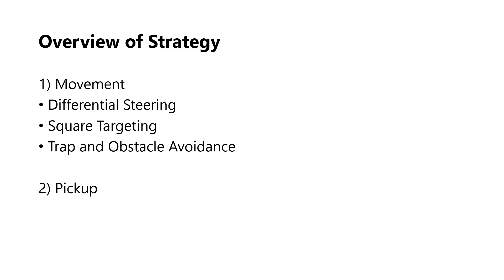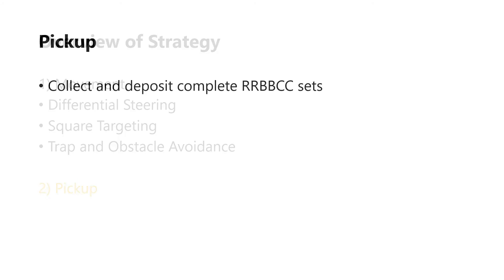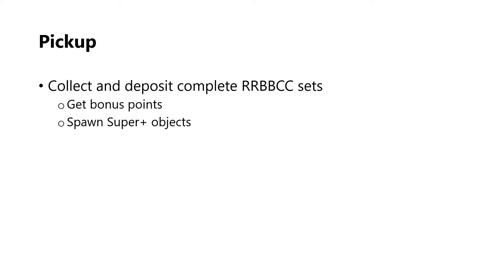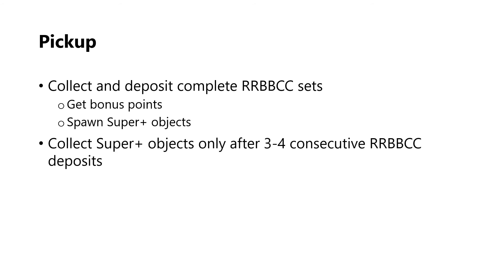Next, I will cover my pickup strategy. The robot aims to collect and deposit complete red, black, and cyan object sets to get bonus points and spawn superplus objects. Since in any one round of deposit we cannot get the bonus points once a superobject is collected, the robot should only start collecting it after 3 to 4 consecutive red, black, and cyan deposits.